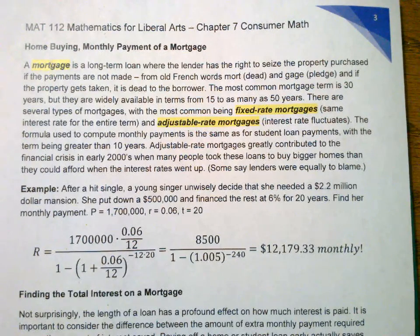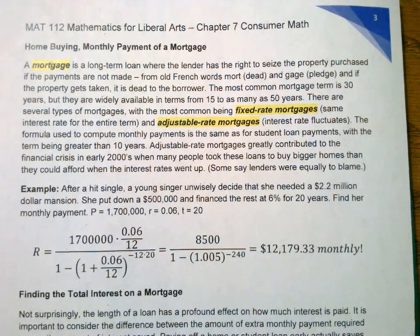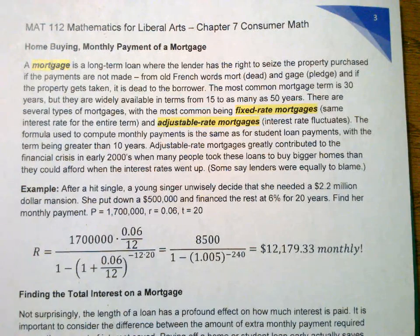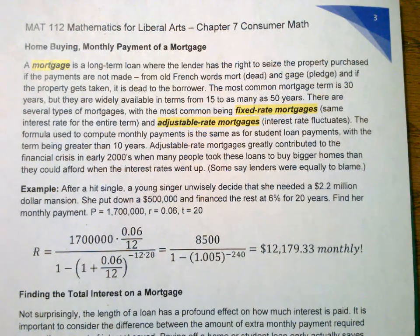If the property gets taken, it's dead to the borrower. The most common mortgage term is 30 years, but they range from as few as 16 to as many as 50. There are several types of mortgages, with the most common being a fixed rate mortgage — the same interest rate for the entire term. There are also adjustable rate mortgages where the interest rate fluctuates with the economy, which can be bad or good.